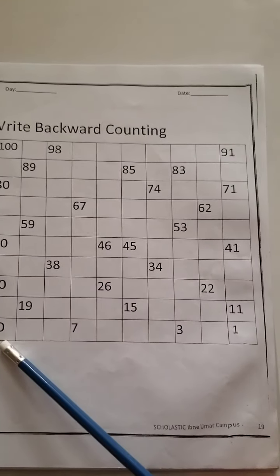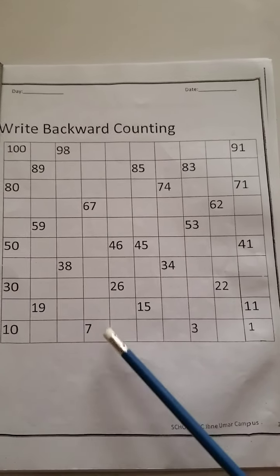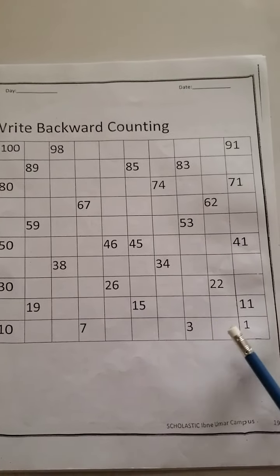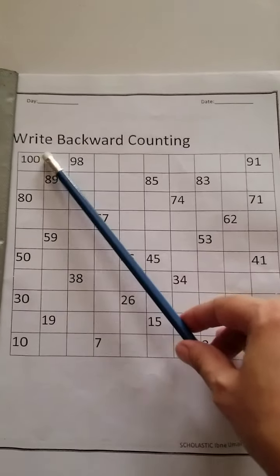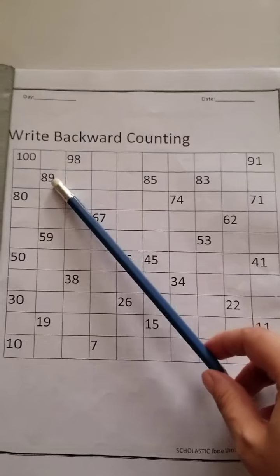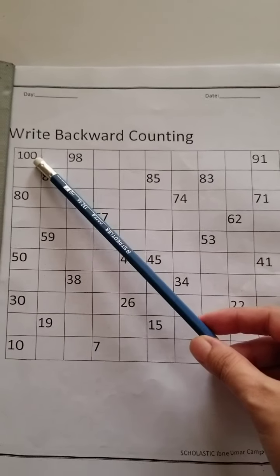that? Yes, nine. Let's read it quickly: ten, nine, eight, seven, six, five, four, three, two, one. Easy! But you are not going to start from here. You will start from one hundred. Okay, so one hundred is written here. What is the previous number? What comes before one hundred?